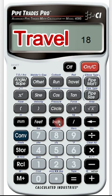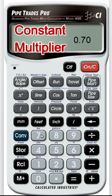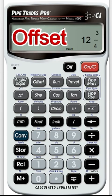18 inches is your travel. Times it by 0.707. That's your constant multiplier. Press equals. And your offset is going to equal 12 and 3 quarters of an inch.